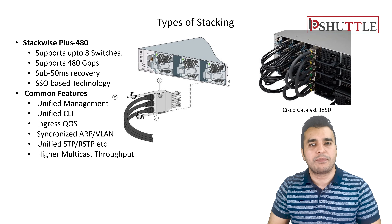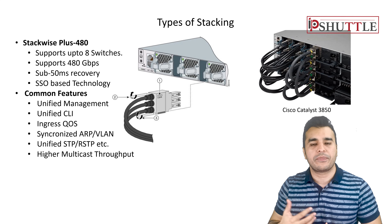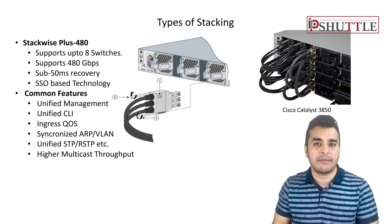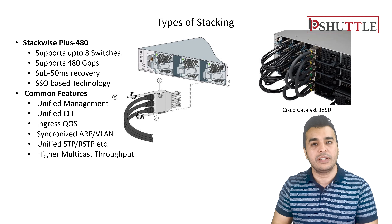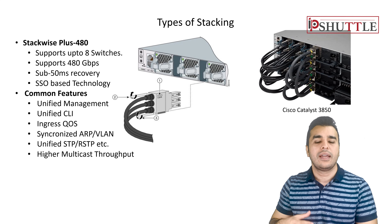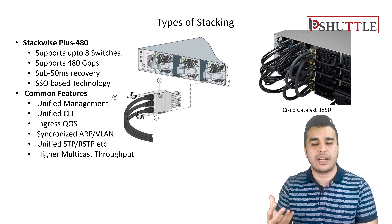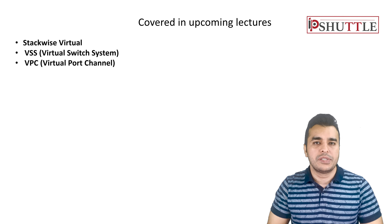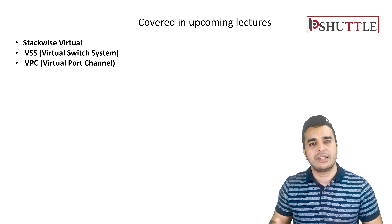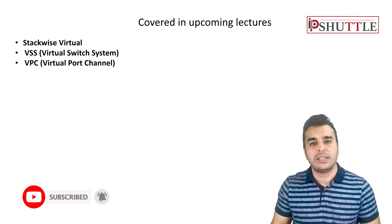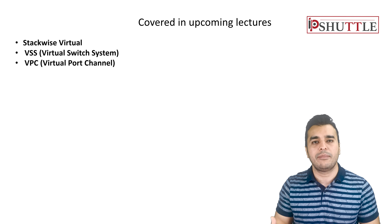Stackwise 480 was introduced in the 3850 series, offering significantly higher throughput than 3750. It supports up to eight switches in a stack with 480 gigs of bandwidth behind it, and failover recovery time has been reduced to milliseconds. We will also discuss Stackwise Virtual, vPC, and VSS in a separate design-focused series, which will be helpful for pre-sales engineers and newer network engineers.